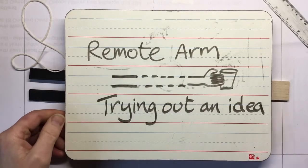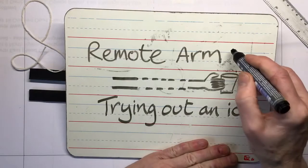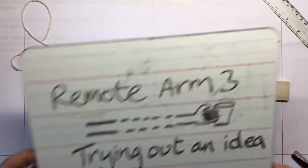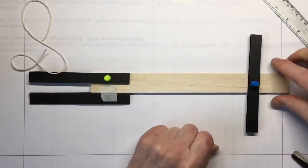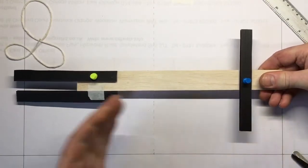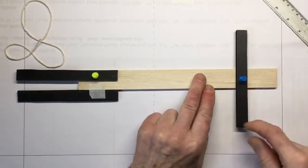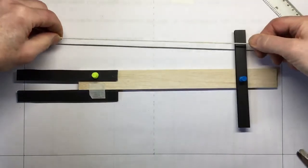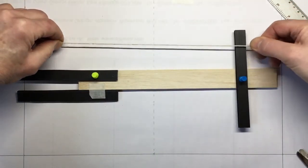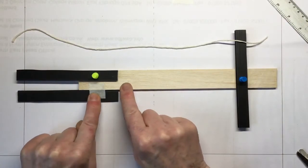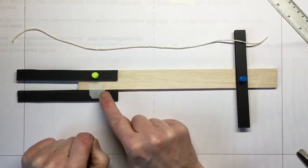Okay, we're ready to try out an idea for remote arm number three. We've decided that we need room at that end to hold the remote arm, we need a lever at this end to give us control, and we're going to use a string to attach, although I haven't decided exactly where.